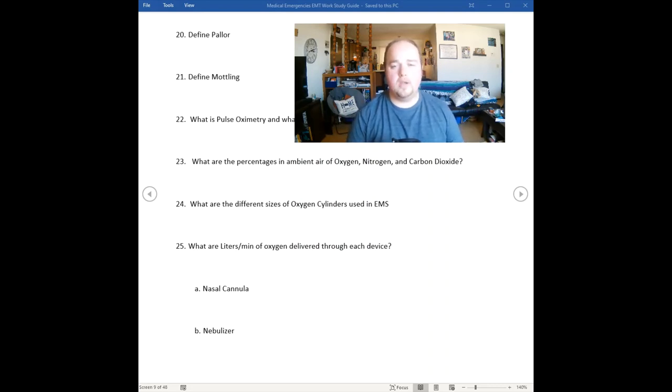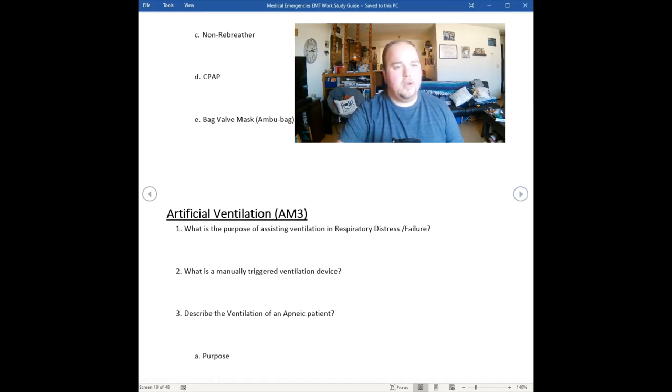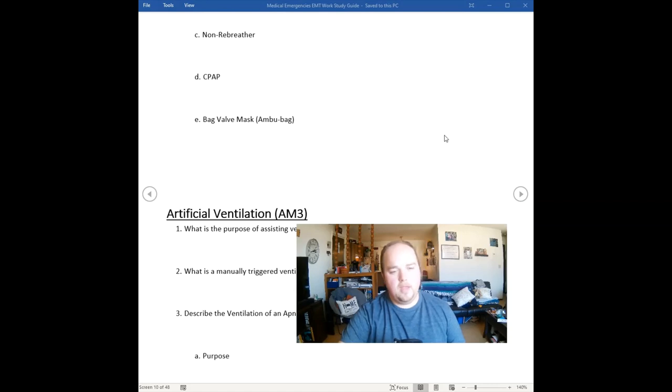A nebulizer, we're going to do between six to eight liters per minute. My general rule is to stay at six liters per minute with the nebulizer. The non-rebreather, everybody knows that it's 10 to 15 liters per minute.